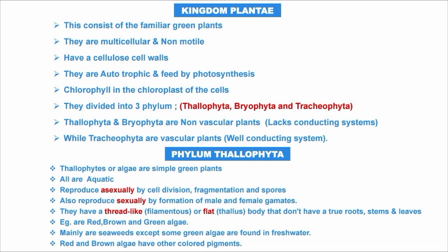Thallophytes are also called algae and are simple green plants. All of them are aquatic. They reproduce asexually by cell division, fragmentation, or spores, and also reproduce sexually by formation of male and female gametes. They have a flat thallus body that does not have a true root, stem, or leaf, and they lack conducting systems.